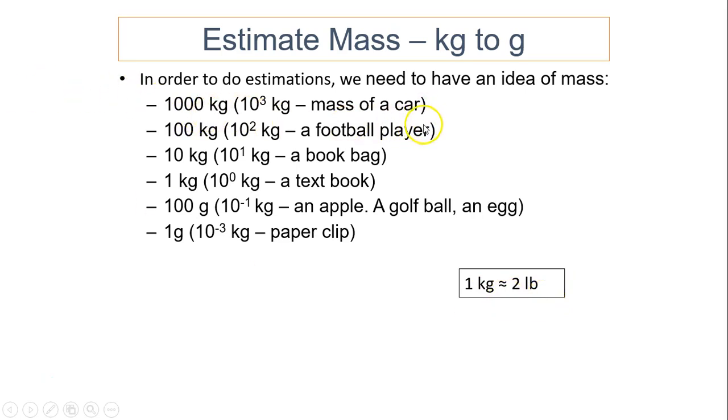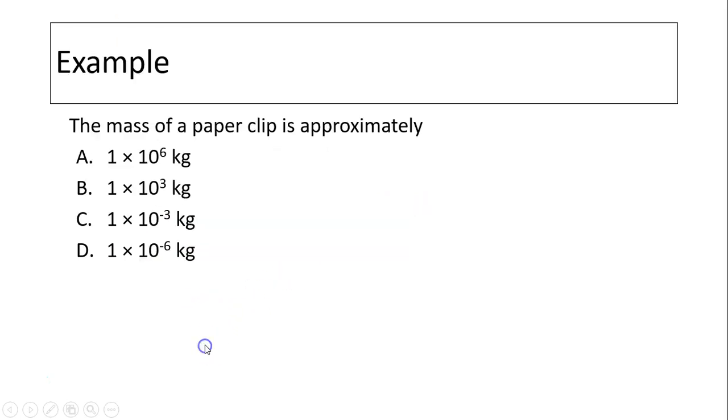So here is the mass of a car, 2,000 pounds. A football player, a heavy one, about 200 pounds. A book bag, maybe about 20 pounds, which is 10 kilograms. One kilogram, two pounds. So think about that's about a textbook. A tenth of kilogram, that's about an apple or a golf ball. So that's about a quarter pound. An egg and smaller would be a paperclip. The mass of paperclip is closest to 1 gram.